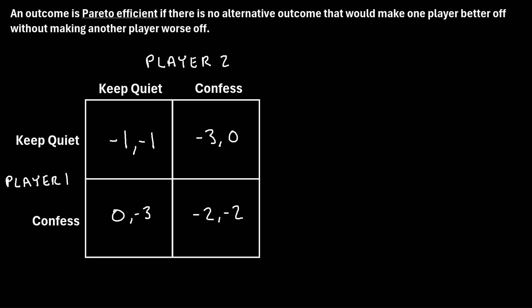In this video, I will explain the concept of Pareto efficiency in the field of game theory. Let's start with a quick definition: we say that an outcome is Pareto efficient if there is no alternative outcome that would make one player better off without making another player worse off.